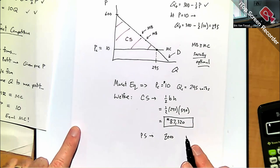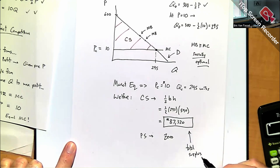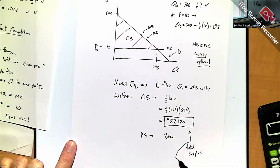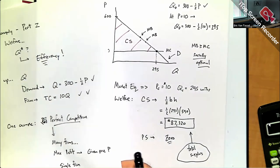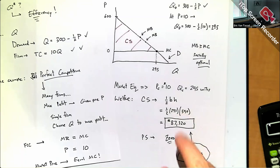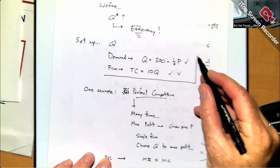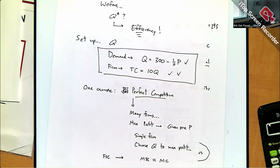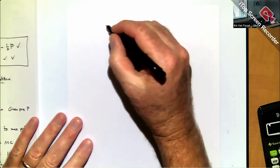Total surplus is consumer surplus plus producer surplus. Since producer surplus is zero here, total surplus collapses to just the consumer surplus of about 87,320. This is our benchmark. Now I want to show what happens if we convert the market to a monopoly setting — same demand and cost parameters, but just one firm instead of many competing firms.